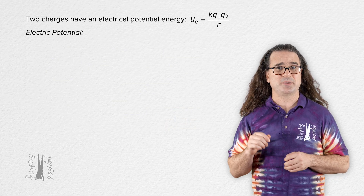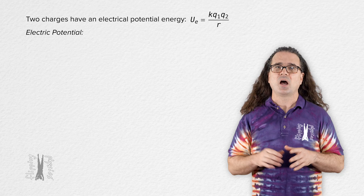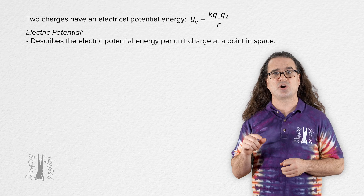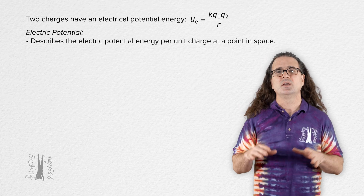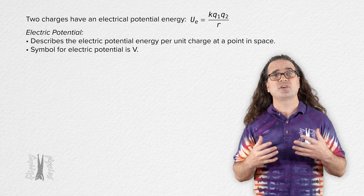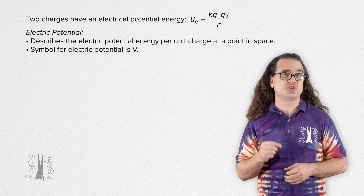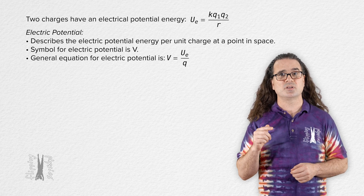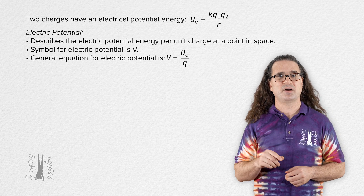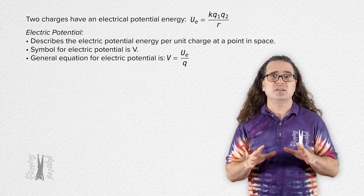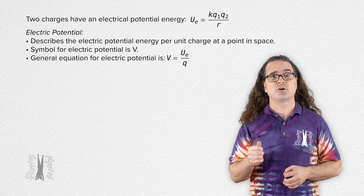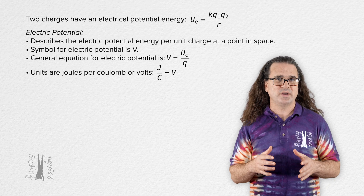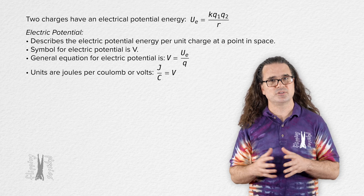There is also something called electric potential. Electric potential describes the electric potential energy per unit charge at a point in space. The symbol for electric potential is uppercase V, and the general equation is that electric potential equals electric potential energy divided by charge. Because electric potential is energy per unit charge, its units are joules per coulomb, to which we have given the name of volts.